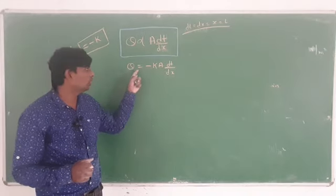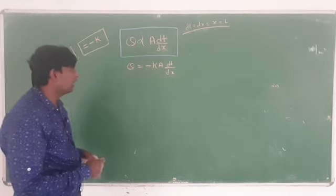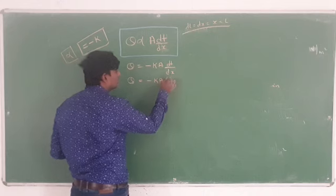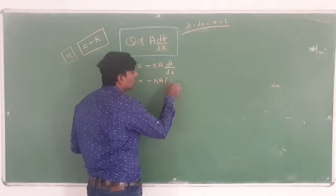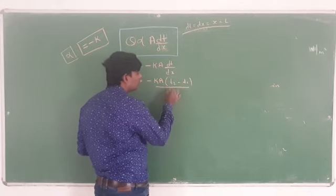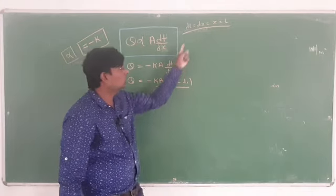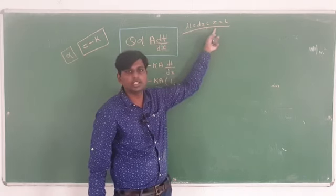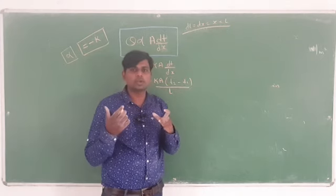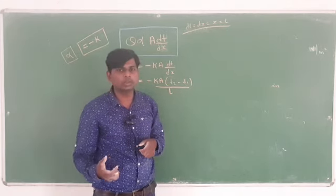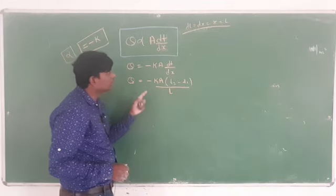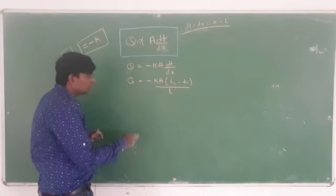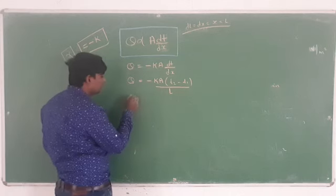You have to remember: Q = minus K·A·dT/dx. Then you can write Q = minus K·A·(T2 - T1)/L. If you multiply the minus sign inside, T2 becomes negative and T1 becomes positive. So Q = K·A·(T1 - T2)/L.